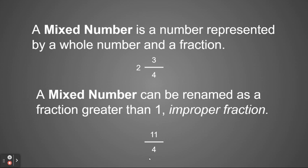11 fourths is an example of an improper fraction. I like to think of an improper fraction as something that's not really following the rules — if someone's being improper, they're not doing what is expected. Typically in a fraction, the numerator is less than the denominator because it's usually less than one whole. However, if the numerator is greater than the denominator, that means the number is greater than one whole and it can be turned into a mixed number.